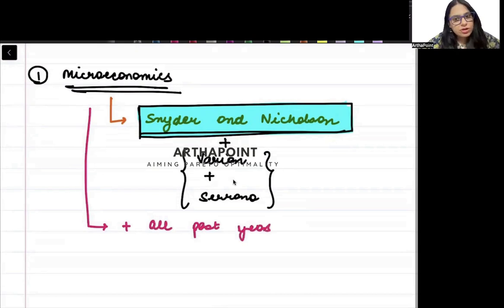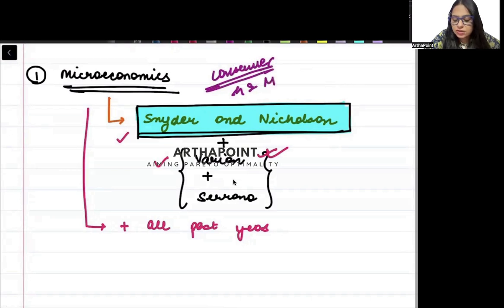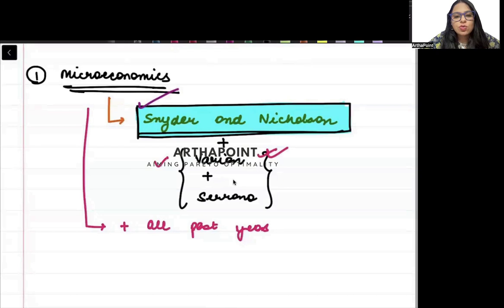Some topics of microeconomics are better in Varian and some are better in Snyder. For example, when we talk about the theory of revealed preference, this is something which is better explained in Varian. But when we talk about the concept of the consumer theory, Hicksian and Marshallian demand curve, that concept is better covered in Snyder. The duality theorem is better covered in Snyder. So what you need to do is combine the two things together and then study accordingly.